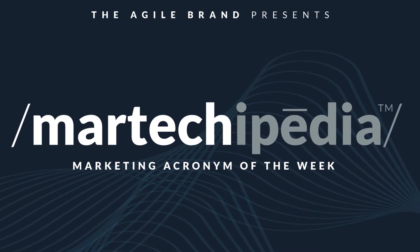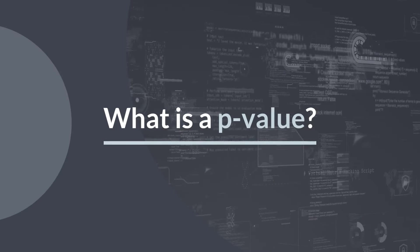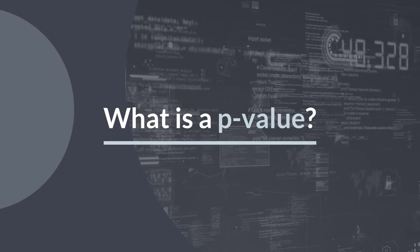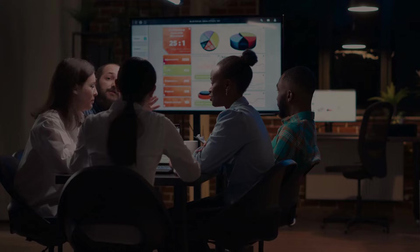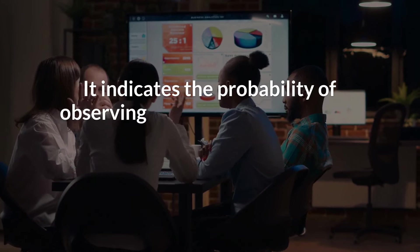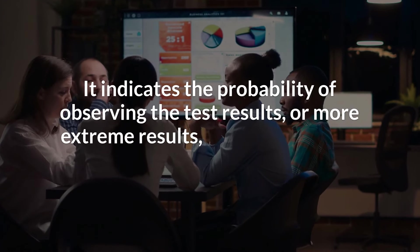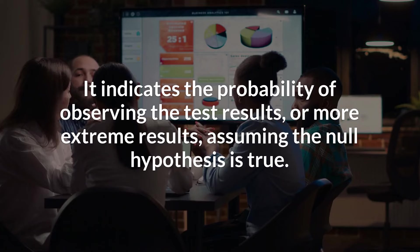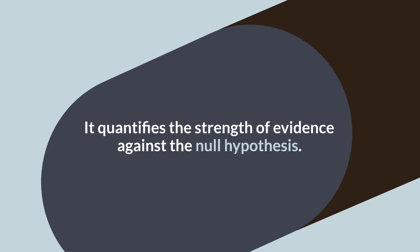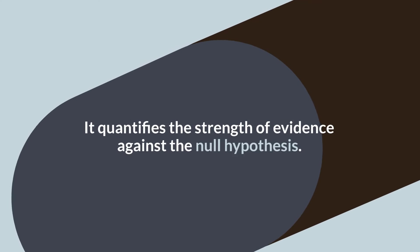A p-value, or probability value, is a statistical measure used to determine the significance of results from a hypothesis test. It indicates the probability of observing the test results or more extreme results, assuming the null hypothesis is true. Essentially, it quantifies the strength of evidence against the null hypothesis.